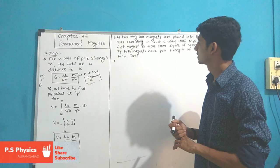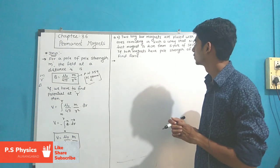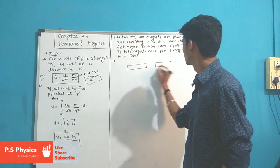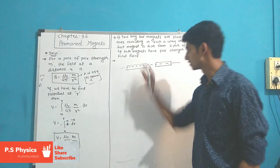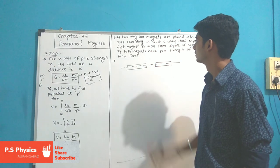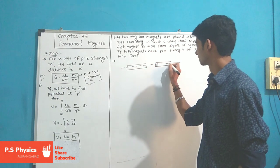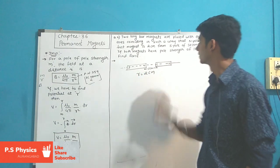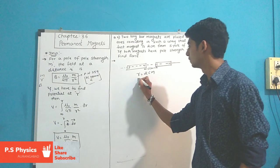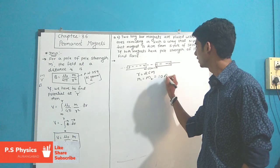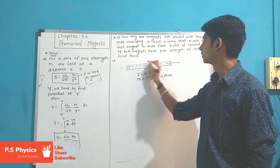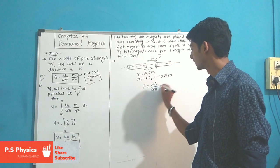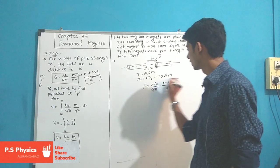Next is question number 2. Two long bar magnets are placed with their axes coinciding, such that the north pole of the first magnet is 2 cm from the south pole of the second magnet. Both magnets have pole strength M1 = M2 = 10 Am. We have to find the force between the two magnets. Since unlike poles face each other, there will be a force of attraction. The formula is F = μ₀/4π × M1×M2 / r².